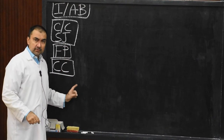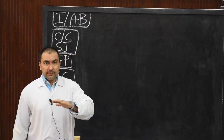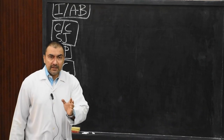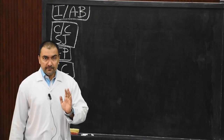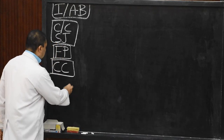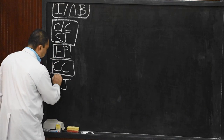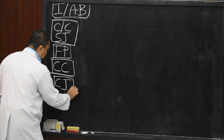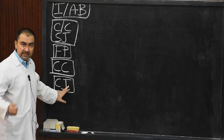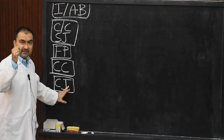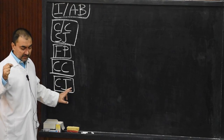Coming to the third point: this knee joint is a modified variety of hinge joint. Basically, it is a condylar variety of synovial joint — that is the basic definition.